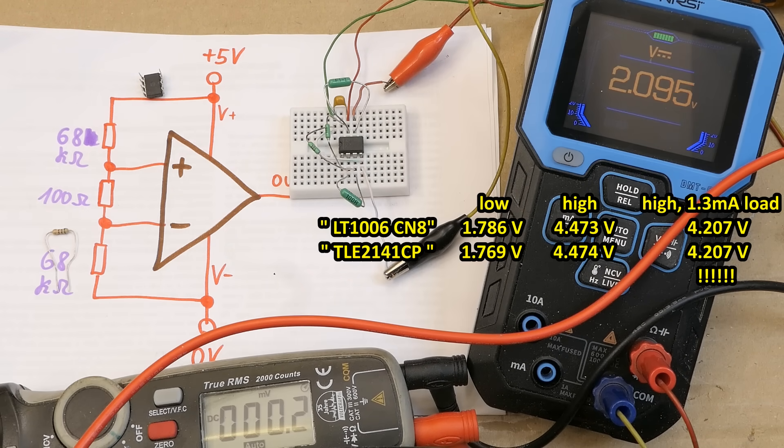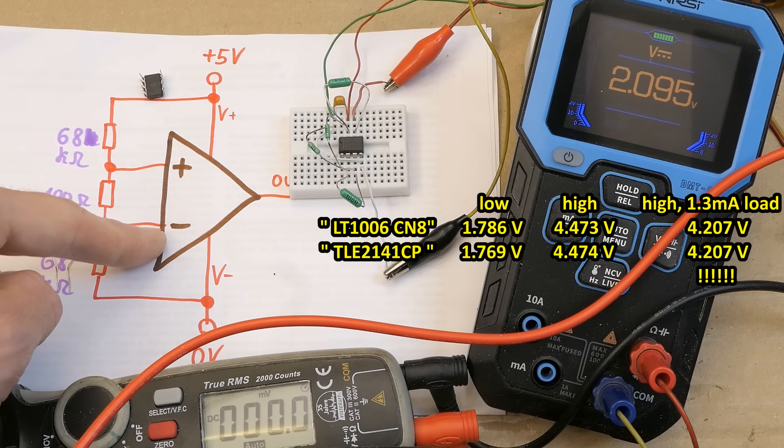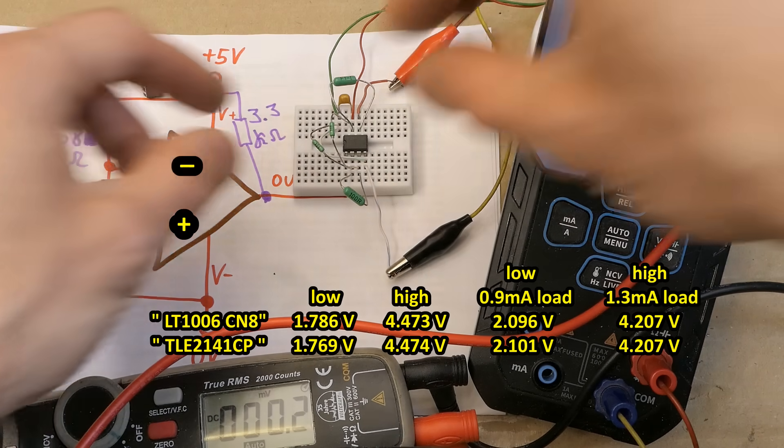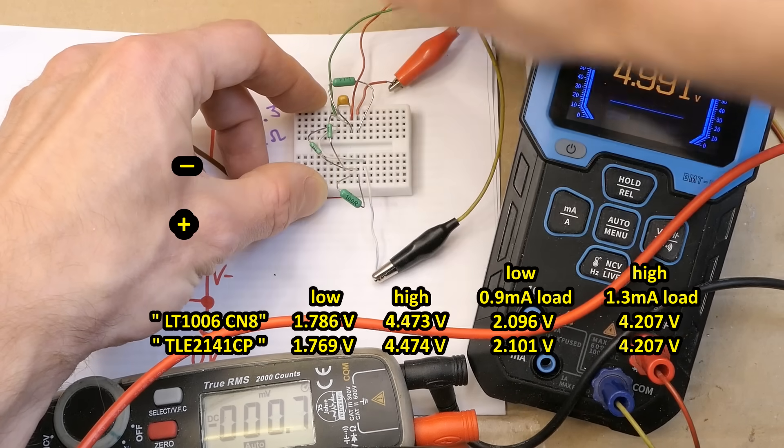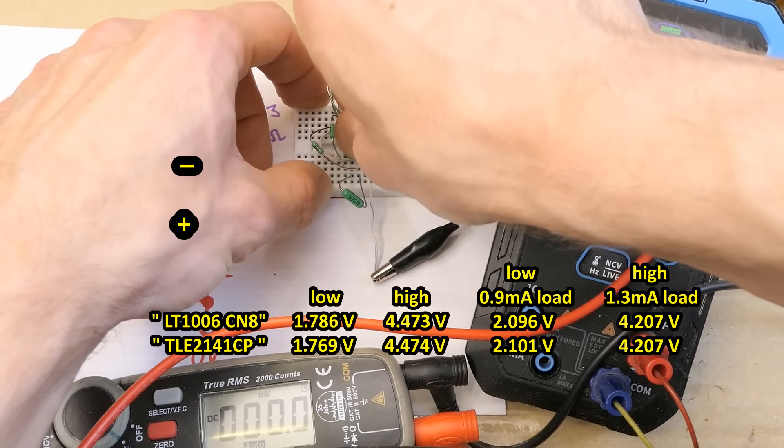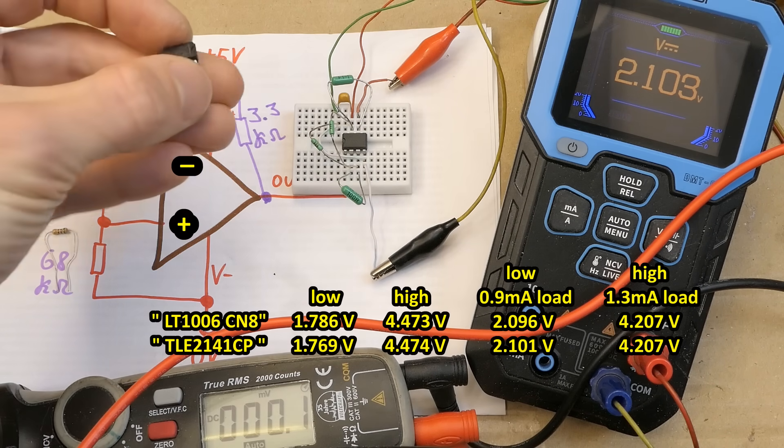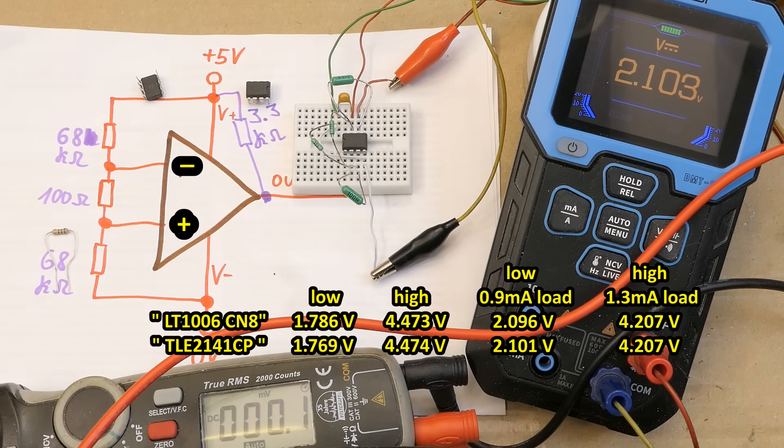I flipped the inputs again so now the inverting is 3 or 4 millivolts higher. The output is low and a 3.3 kilo ohm resistor pulling it up. 2.09 volts. LT1006 and TLE2141. Again virtually the same voltage. It's almost like these two completely different op-amps contain the same circuitry.